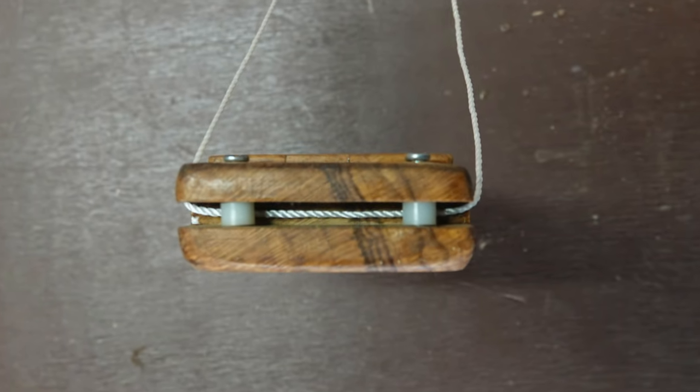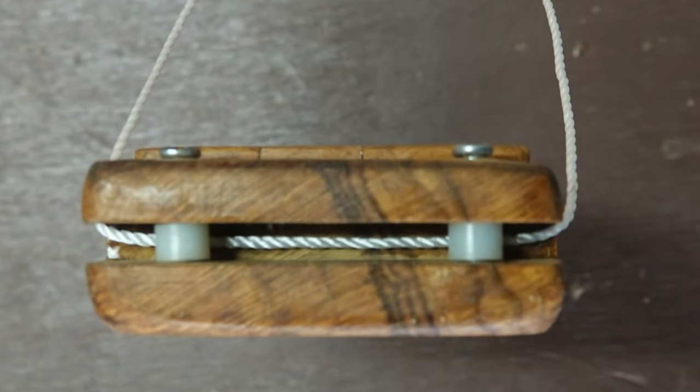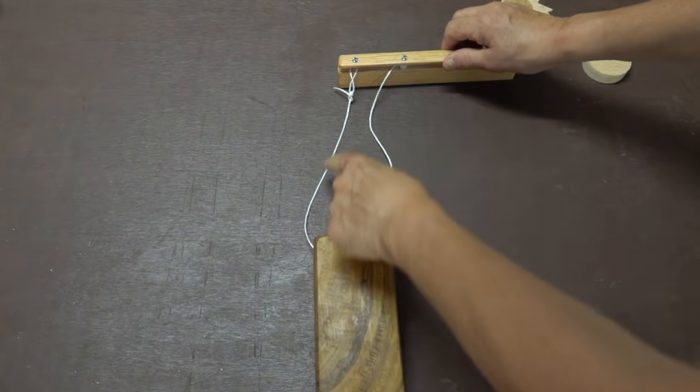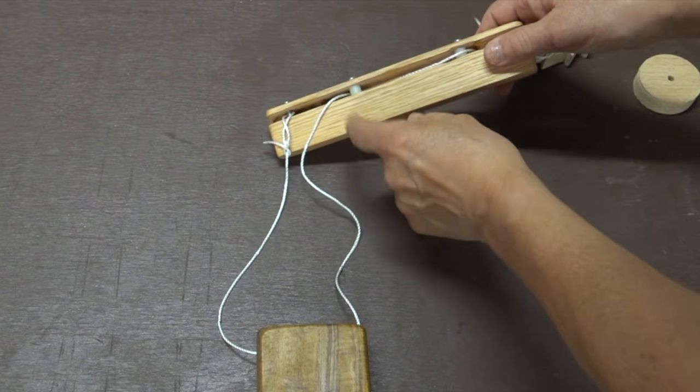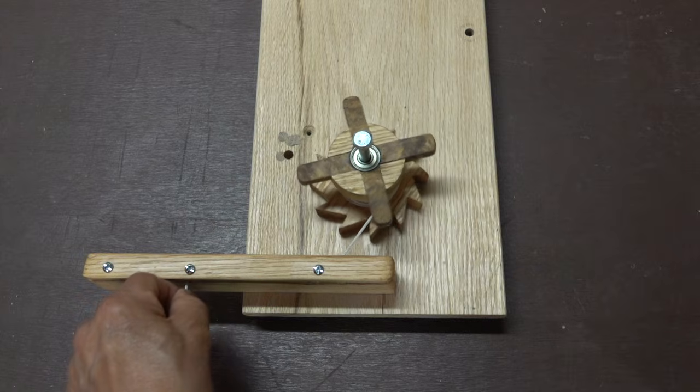The weight itself has two pulleys built into it and since this weight is supported by two strings that means only half the force gets applied to the string that eventually works its way to the two pulleys on the support bar and then on to the escapement wheel.